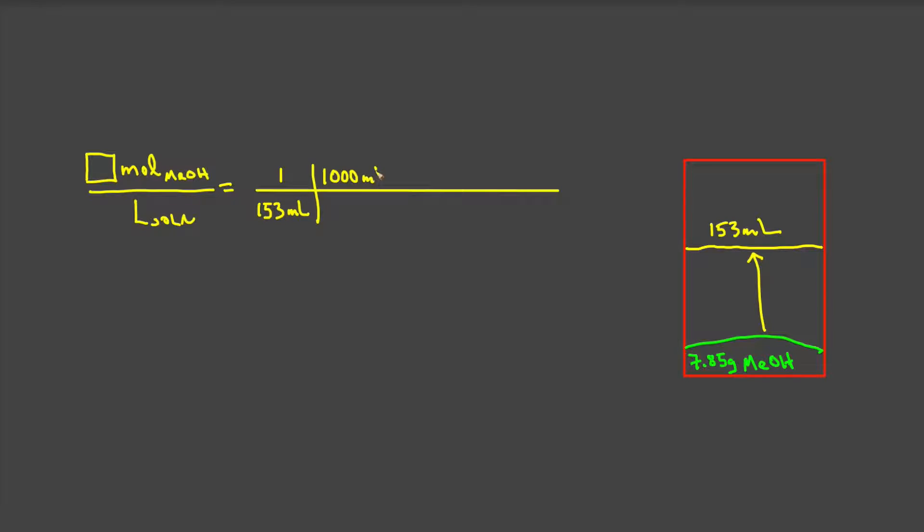Now, I know my answer requires liters of solution in the denominator, so let me go ahead and convert that. I know there's 1,000 milliliters in one liter. At this point, I can see that I have the unit that I'm looking for in the denominator. I know that I have 7.85 grams of methanol. That is a given factor, so I will put it over 1. I put grams in the top because I know that I can convert grams to moles quite easily.